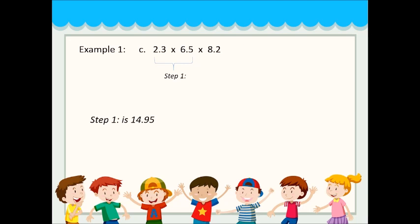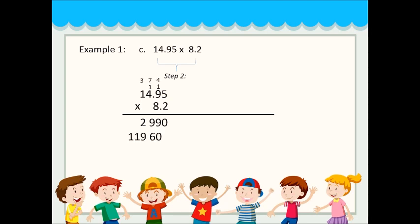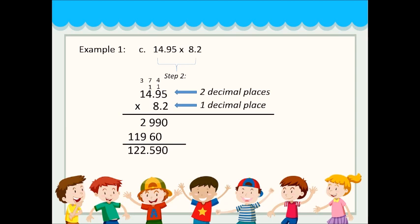We have the answer from step 1, which is 14.95. Now we solve step 2: 14.95 times 8.2. 2 times 14.95 gives 2990, and 8 times 14.95 gives 11960. Adding those: 122,590. The first number has 2 decimal places, the second has 1, so we move the decimal point 3 places — 1, 2, 3 — giving 122.590.